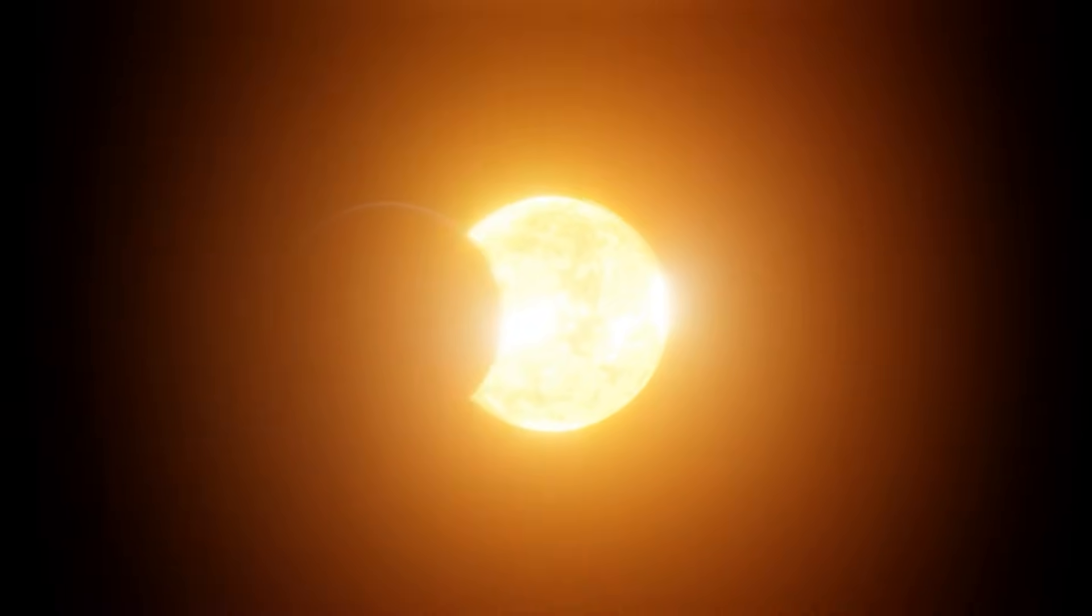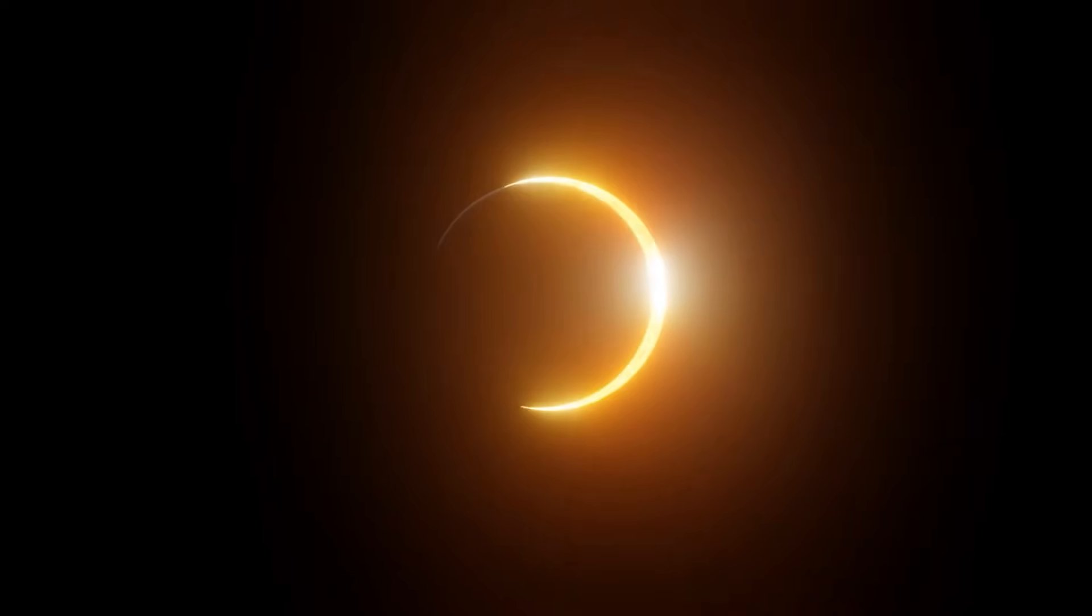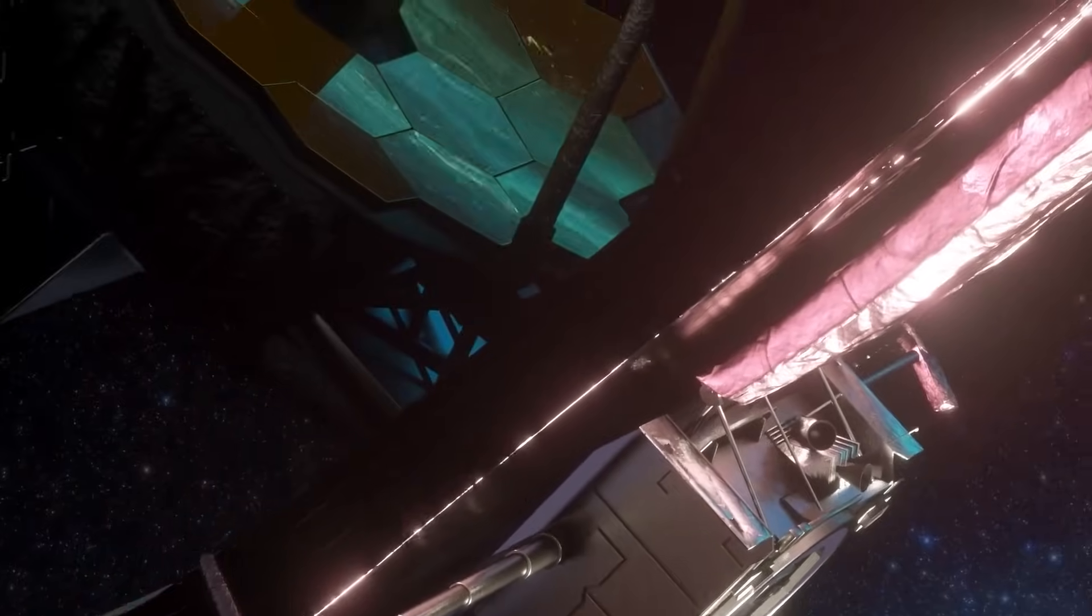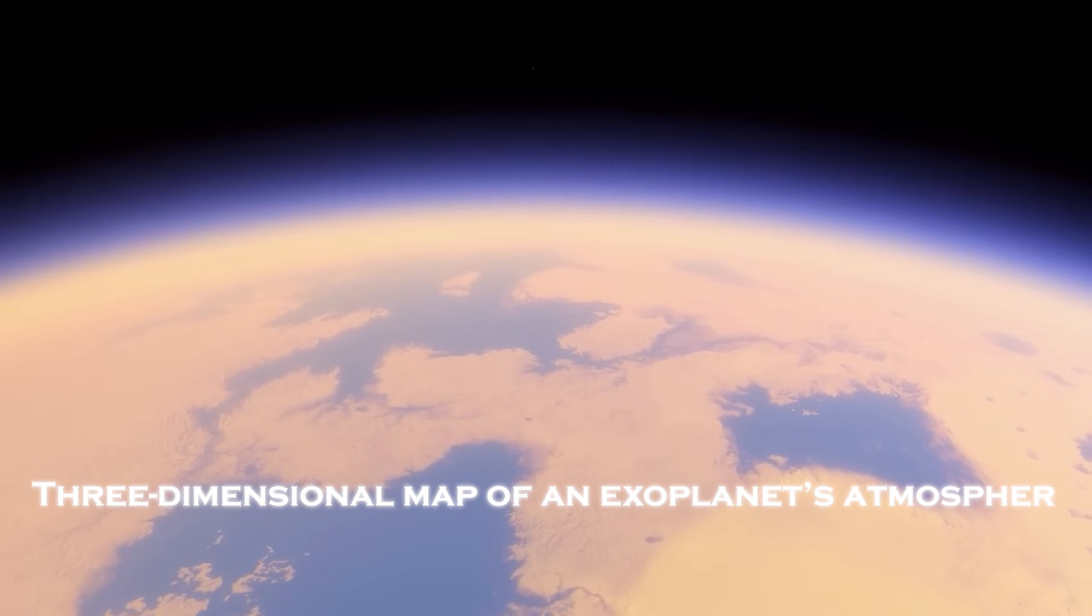Using advanced spectroscopy during planetary eclipses, Webb achieved something never done before – a three-dimensional map of an exoplanet's atmosphere.